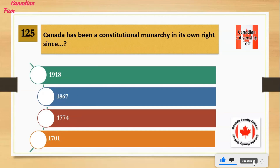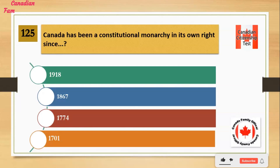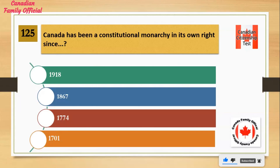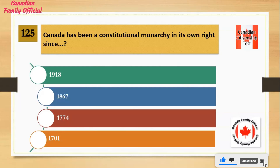Canada has been a constitutional monarchy in its own right since: Number 1: 1918. Number 2: 1867. Number 3: 1774. Number 4: 1701. And the answer is 1867.